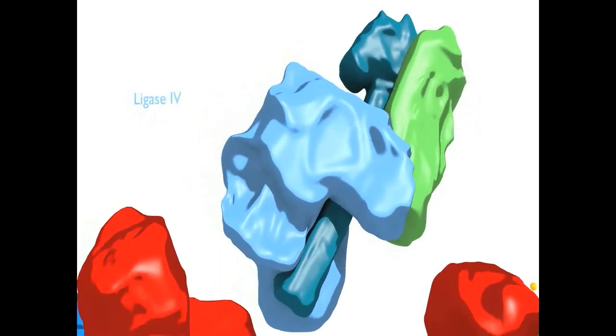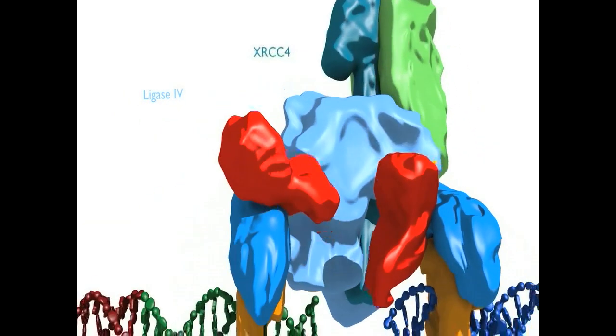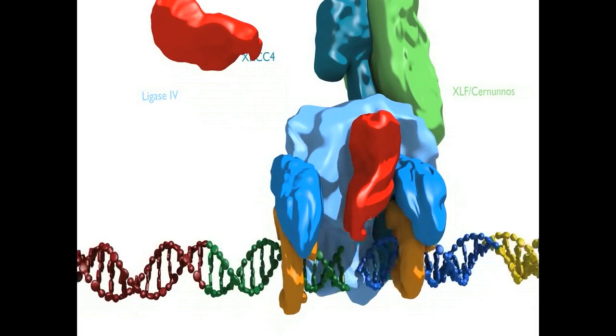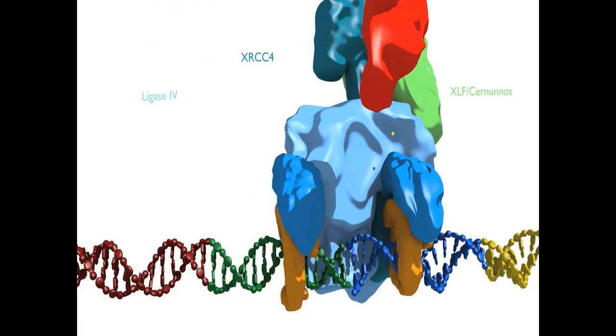Ligase 4, acting in a complex with XRCC4 and XLF-Cernunnos, ligates the broken ends together.